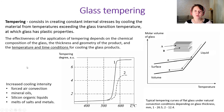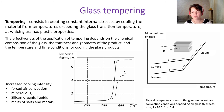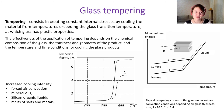Glass tempering consists in creating constant internal stresses by cooling the material from a temperature exceeding the glass transition temperature, at which glass has plastic properties. Tempering means very fast cooling of the glass melt — this relates to the changes in refractive index observed during cooling of the glass melt discussed previously. We increase cooling intensity using forced air convection, mineral oils, silicon-organic liquids, or melts of salts and metals.